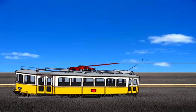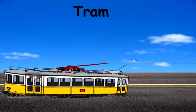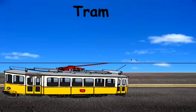What's this? This is a tram. There is something unique about tram — tram doesn't need any kind of fuel. It runs on electricity. Can you see that black line overhead? That is the wire from which the tram collects electricity and moves.